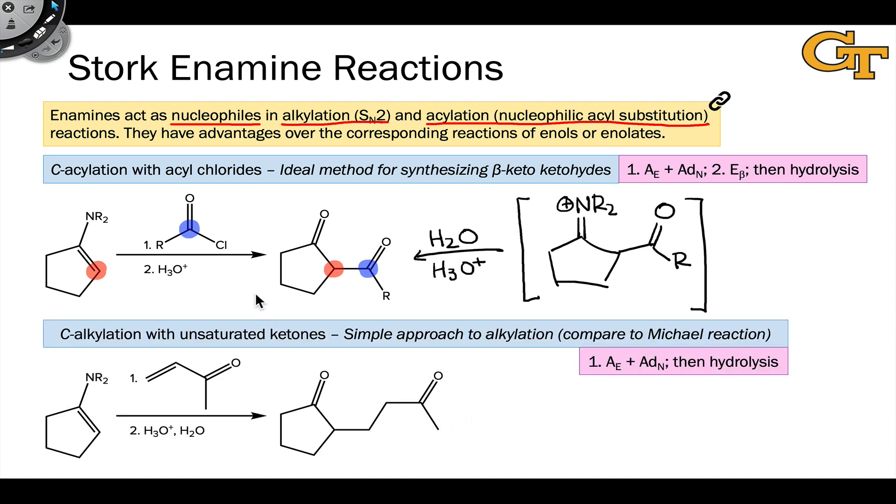Enamines are soft nucleophiles, and this means that they can also be alkylated using unsaturated ketones in a Michael-type approach. For example, if we treat an enamine with an alpha-beta unsaturated ketone followed by hydrolytic conditions again, we get a reaction between...